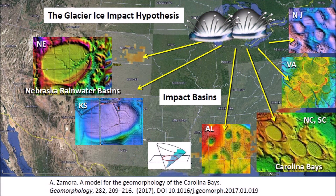Welcome to another edition of the Carolina Bay of the day, where we study the secondary impacts made by glacier ice boulders that were ejected by one or more extraterrestrial impacts on the Laurentide Ice Sheet by the Great Lakes. The secondary impacts produced seismic vibrations that liquefied unconsolidated soil, and the oblique impacts of glacier ice created inclined conical cavities that became shallow elliptical basins by viscous relaxation. In Nebraska, these basins are called rainwater basins, and along the Atlantic Coastal Plain, they are called Carolina Bays.